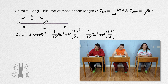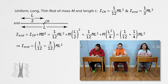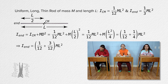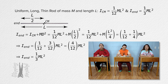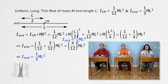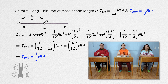The quantity L over 2 squared is L squared over 4. We can factor out mass times length squared, get a common denominator of 12. One plus 3 is 4, and 4 over 12 is one third. So the rotational inertia of a uniform long thin rod about its end equals one third total mass times length squared, just like we knew at the beginning.